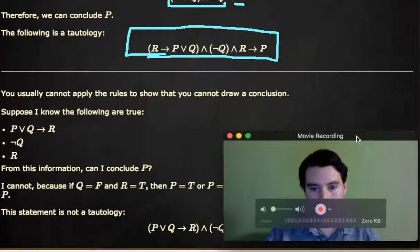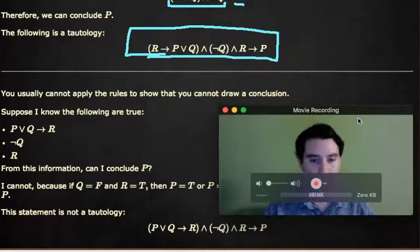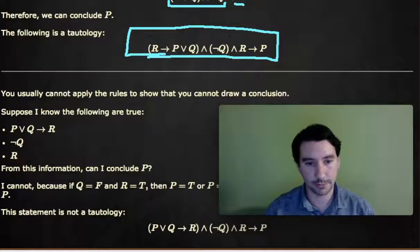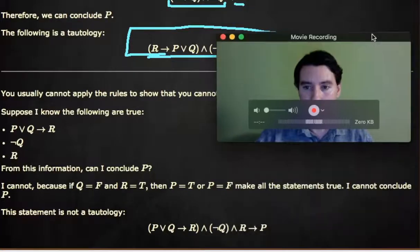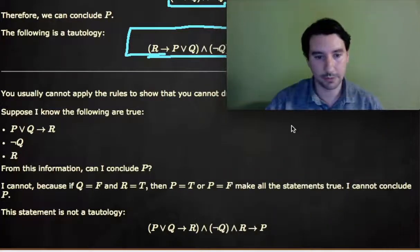So you can't use these rules to show that you cannot draw a conclusion. And so therefore, if a statement is false, what you actually end up having to do is introducing a counterexample. And that is a set of conditions that falsifies the statement.